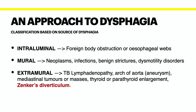Zenker's diverticulum is also an important form of extramural dysphagia. This is where the pharyngeal mucosa herniates through Killian's dehiscence and can be associated with cricopharyngeal dysmotility. Zenker's diverticulum commonly presents with dysphagia, regurgitation, and halitosis. Finally, a malignancy in the gastric cardia may cause a pseudoachalasia because it is pushing on the lower esophageal sphincter.